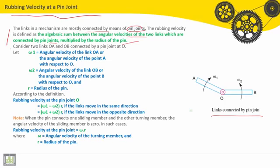So consider two links OA and OB connected by pin joint at O. Let ω₁ or Omega 1 be the angular velocity of link OA, or the angular velocity of point A with respect to O. And ω₂ or Omega 2 is the angular velocity of link OB, or the angular velocity of point B with respect to O.